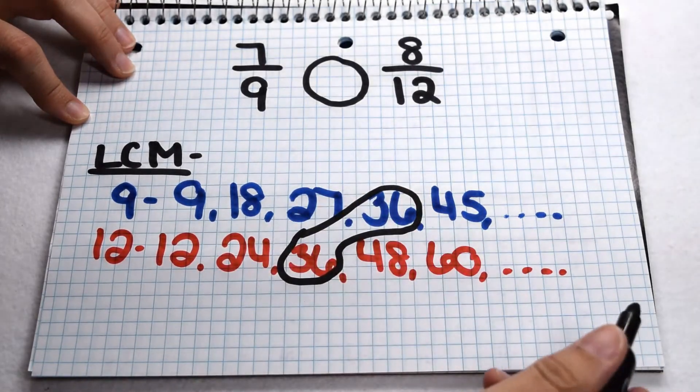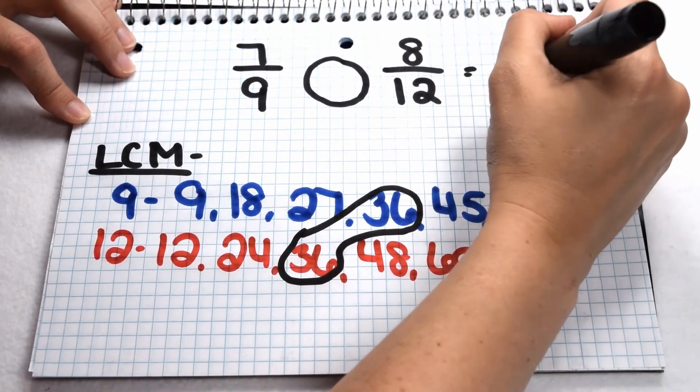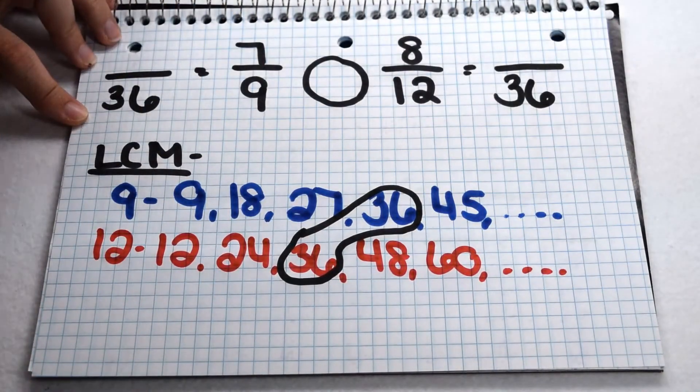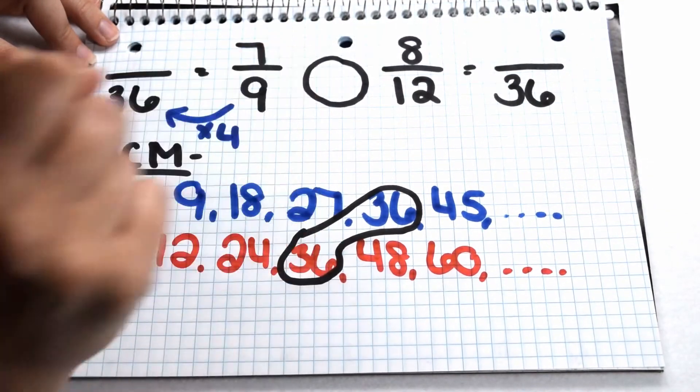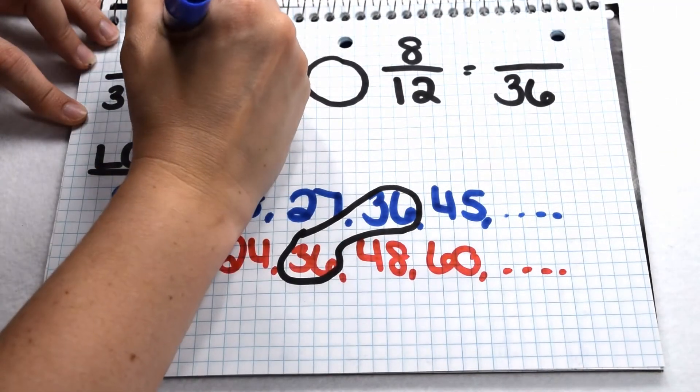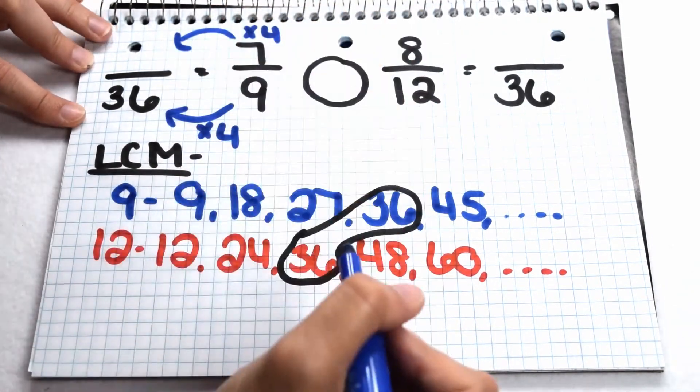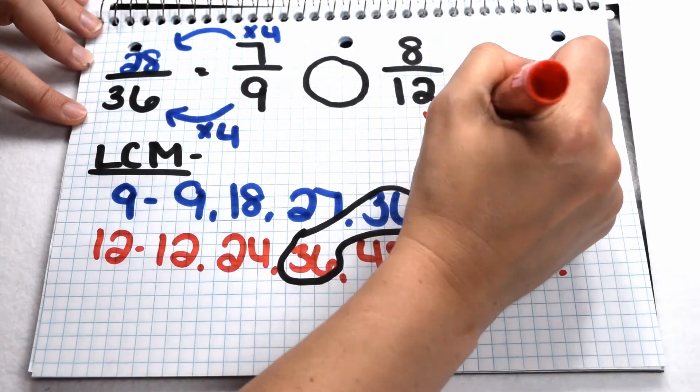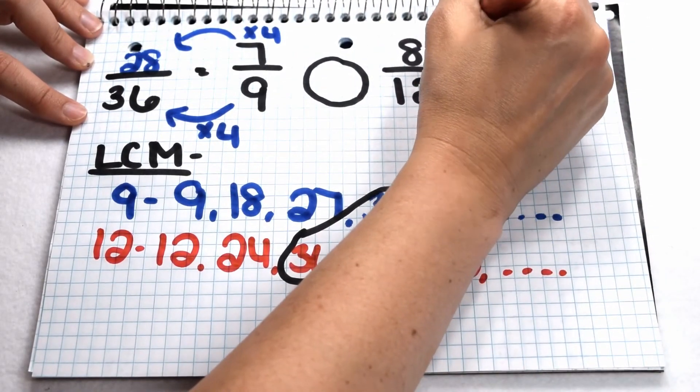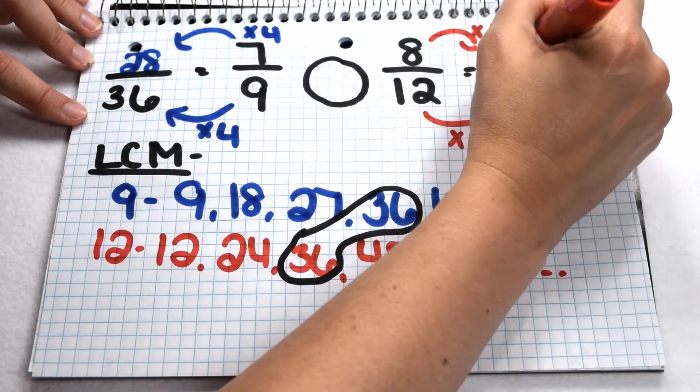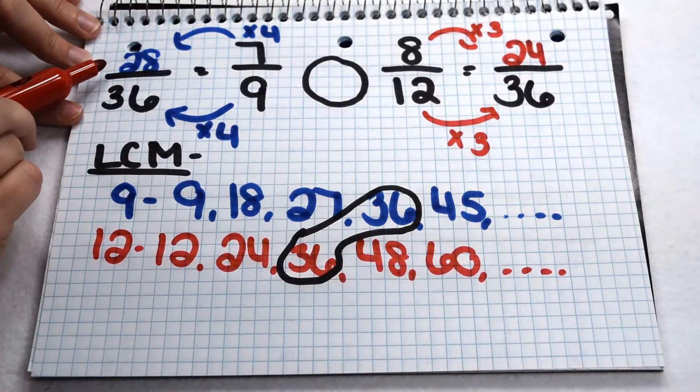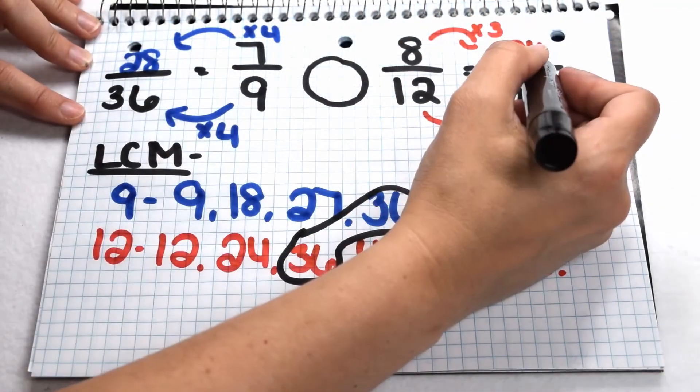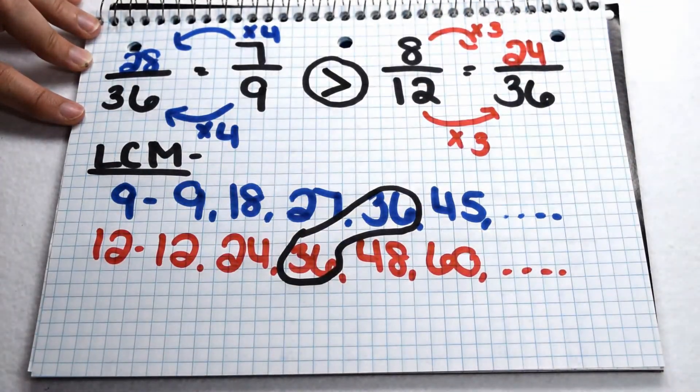That means we'll make equivalent fractions using 36 as our common denominator. For 7 ninths, to get from 9 to 36, we multiplied by 4. Since we multiplied our denominator by 4, that means we need to multiply our numerator by 4 as well. 7 times 4 comes out to give me 28. For 8 twelfths, I multiply 12 times 3 to give me 36, so I need to multiply 8 times 3 as well. 8 times 3 gives me 24. So now, I can compare 28 out of 36 to 24 out of 36. 28 pieces is more than 24 pieces, so that tells me that 7 ninths is going to be greater than 8 twelfths.